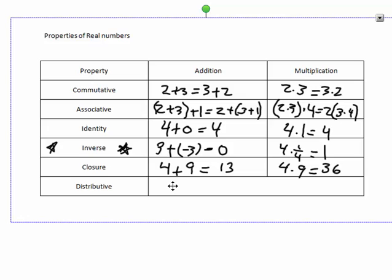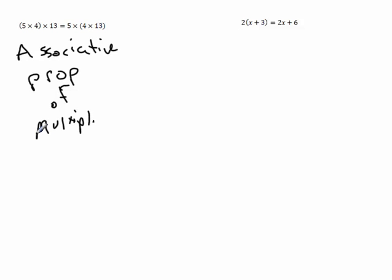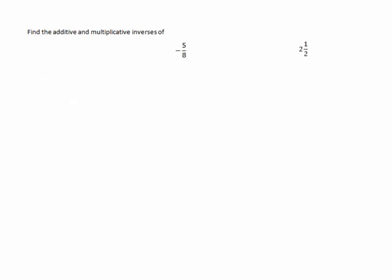Now the distributive property, we've already been over this. This I'm going to do as a(b + c), and we get ab + ac. So I have 5(4 × 13). Yeah, so this is the associative property, associative property of multiplication. Here, what happened to the 2? The 2 was distributed to both the x and the 3, so this is our distribution property.